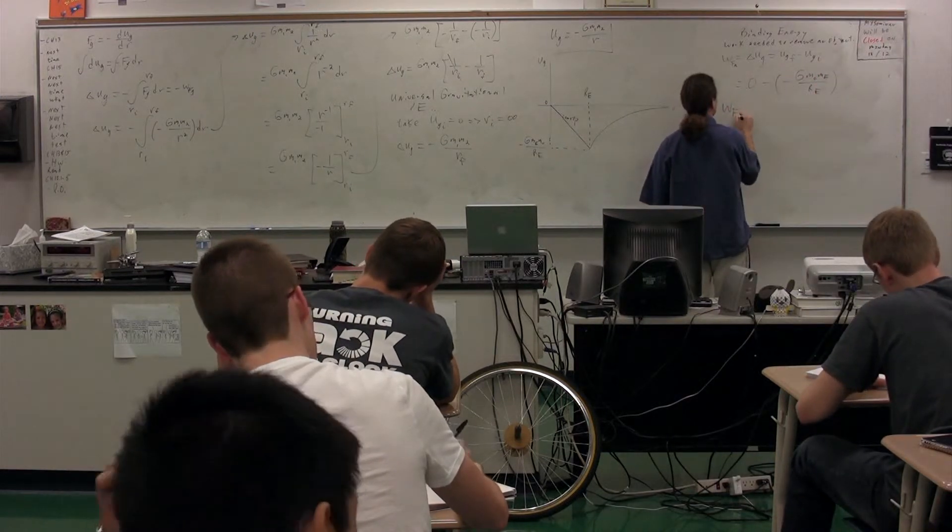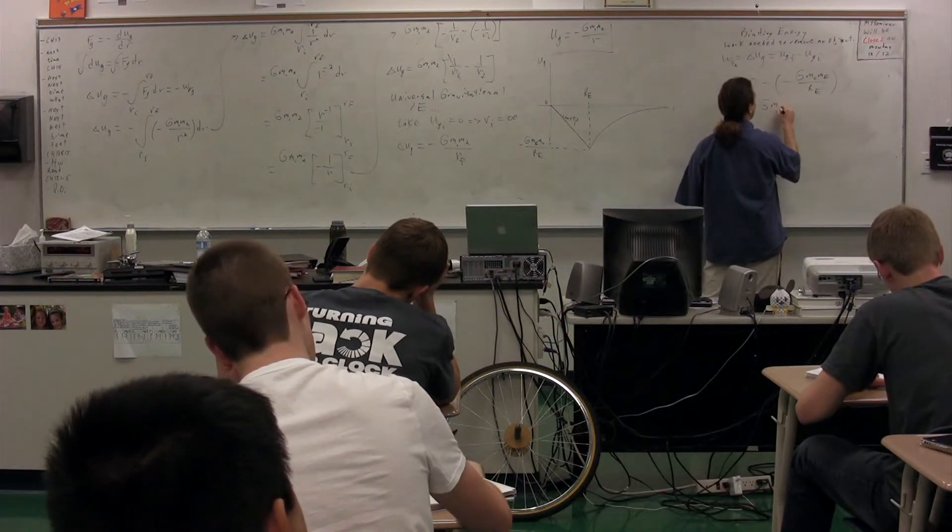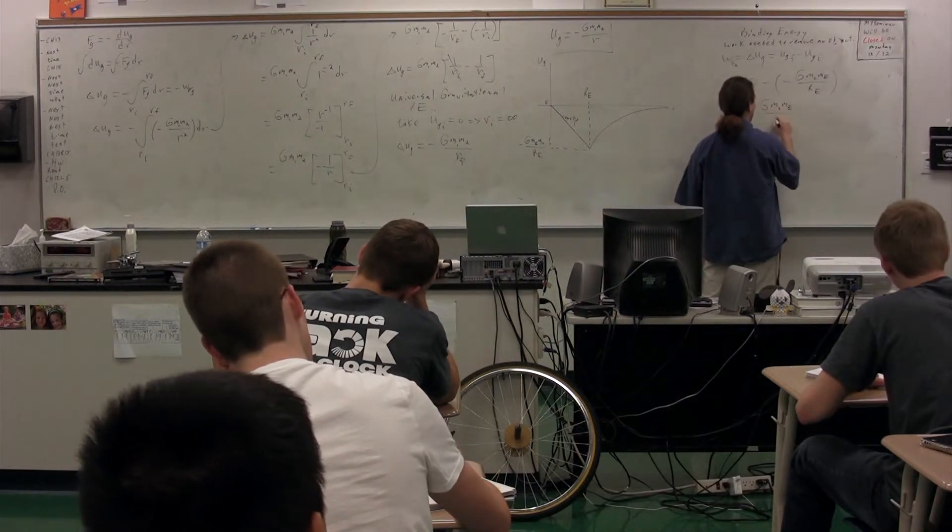So the work done by the force applied or the binding energy is going to be big G, the mass of the object, the mass of the earth, divided by the radius of the earth.